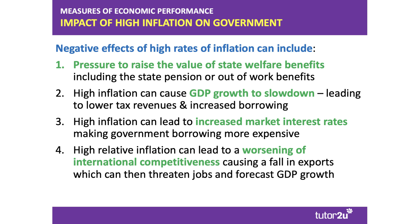The second point is that persistently high inflation can act as a drag on real spending and investment and can cause the rate of GDP growth to slow down. Typically, a combination of high inflation and slow growth is called stagflation. When the economy slows down and perhaps even goes into recession, that can lead to a fall in direct and indirect tax revenues, which again can increase the fiscal deficit and budget borrowing requirement.